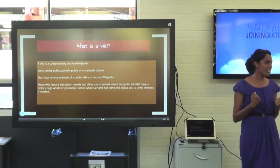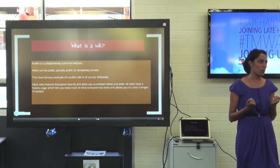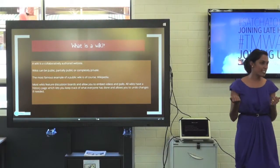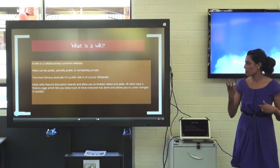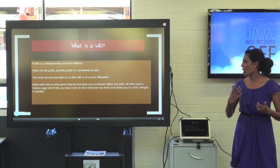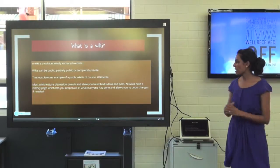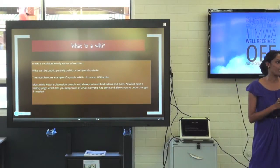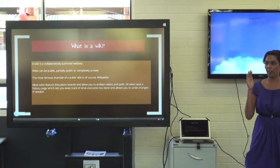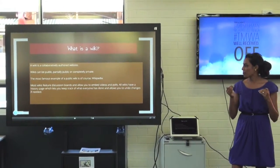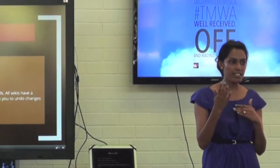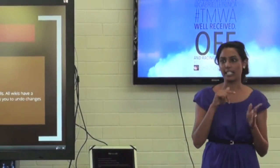The most famous example of a public wiki is of course Wikipedia. Most wikis like Wikipedia feature discussion boards; they allow you to embed videos and polls. All wikis have the crucial history page which allows you to see what everyone has done and go back and make changes if need be. So if anyone does anything inappropriate, it's really easy to fix.